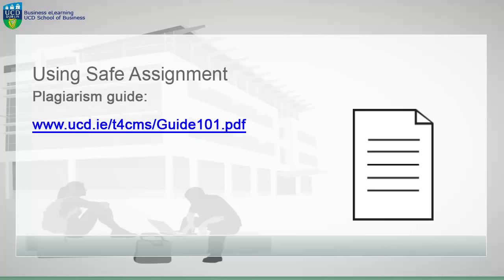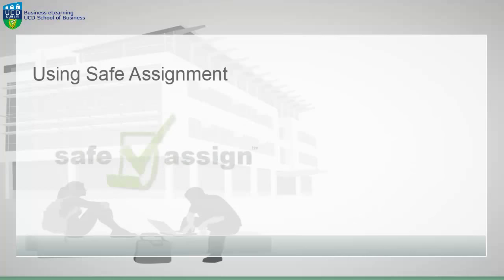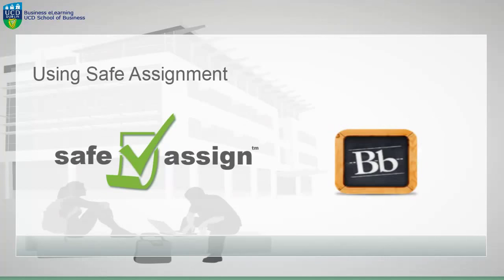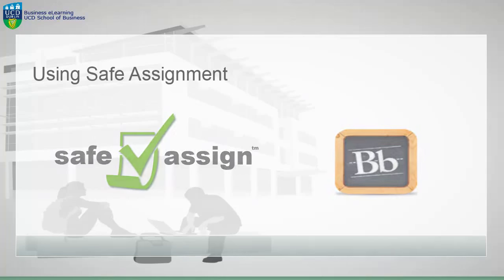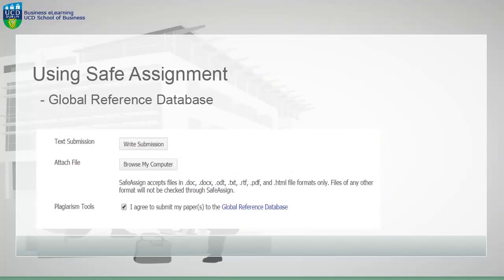A guide on how to avoid plagiarism can be found at www.ucd.ie/t4cms/guide101.pdf. SafeAssign is used within Blackboard to prevent plagiarism and to create opportunities to help you identify how to properly attribute sources rather than paraphrase. When you submit a SafeAssign it will submit your assignment text into the global reference database. Your text will be checked and compared against other institutions around the world, which in turn protects your assignment from being plagiarised too.